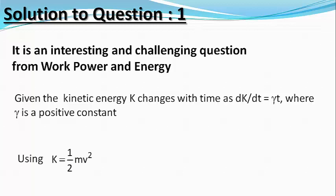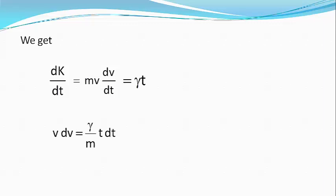Using kinetic energy K equals half mv squared, we get dK/dt equals m v dv/dt, which equals gamma t, or v dv equals gamma/m times t dt.